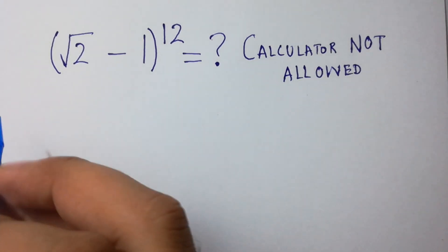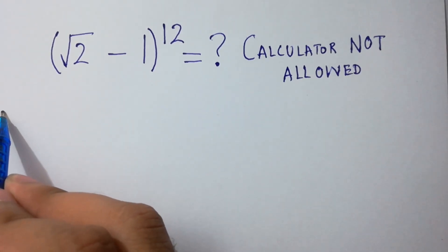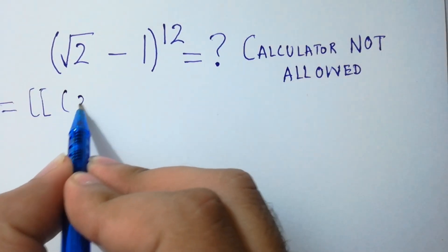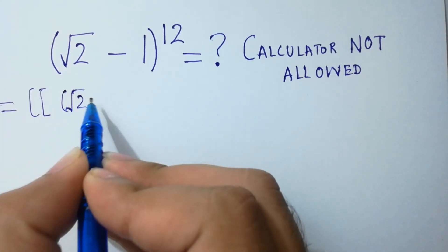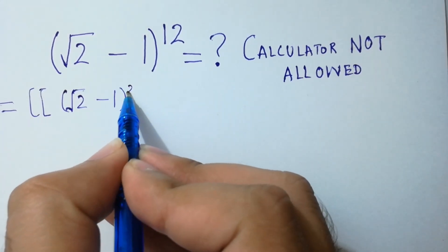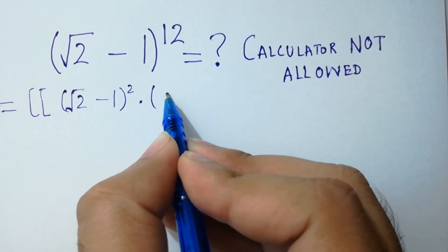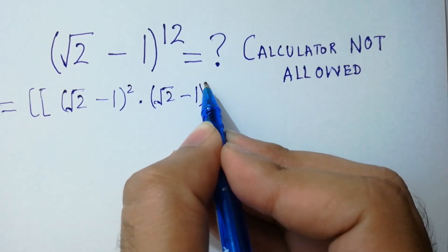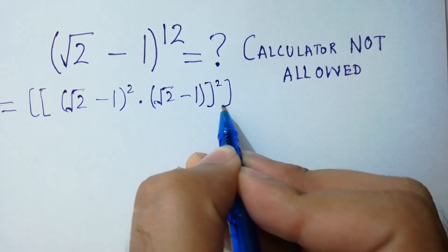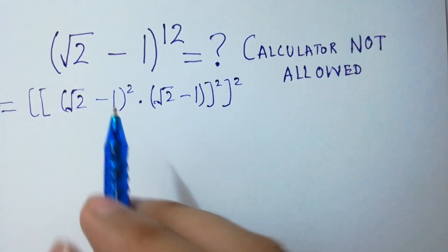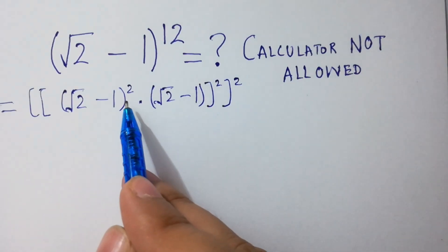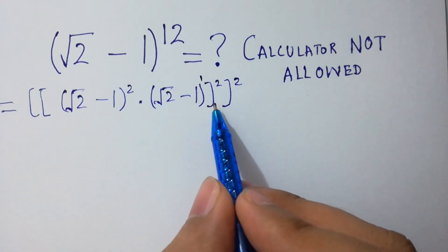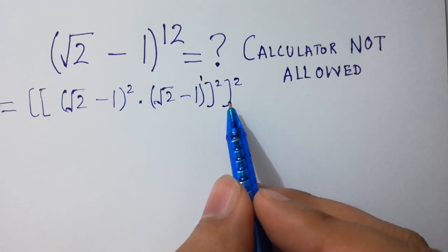It will be equal to square root of 2 minus 1 squared, times square root of 2 minus 1 squared, because the base is the same. This has power 2 and this has power 1, so 2 plus 1 equals 3, then 3 times 2 equals 6, and 6 times 2 equals 12. Got it?